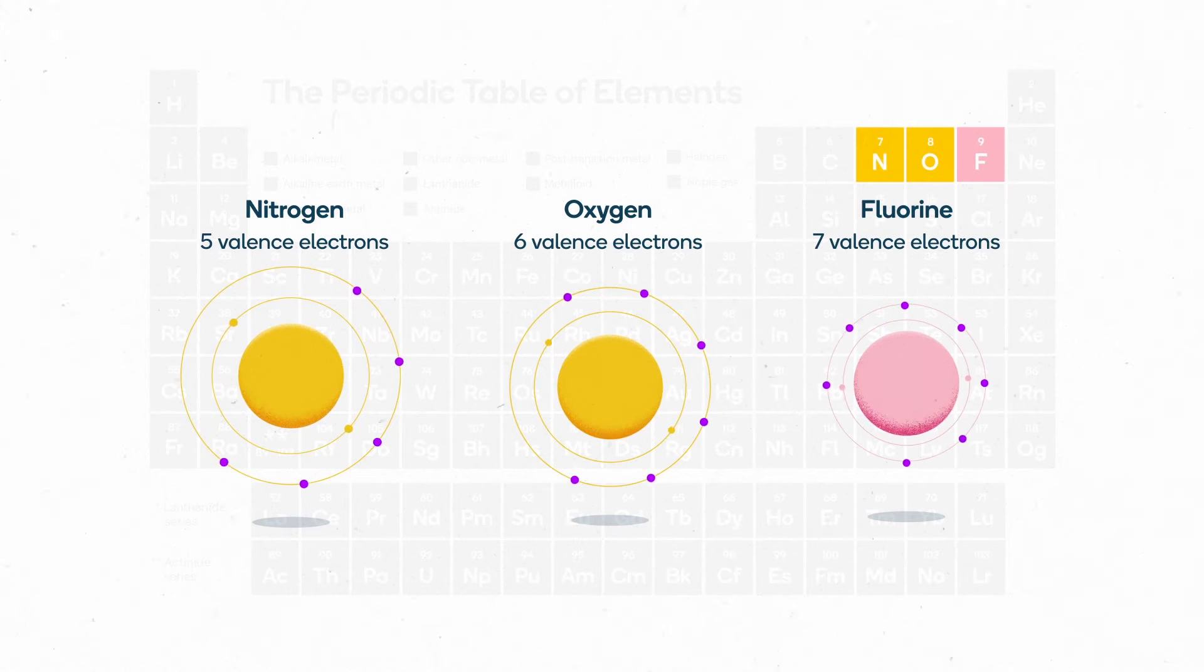While you might assume that adding a valence electron would make an atom bigger, it actually has the opposite effect. The atomic radius gets smaller because adding electrons increases the negative charge of the valence shell. This creates a stronger attraction to the positively charged nucleus, pulling the electrons in closer.